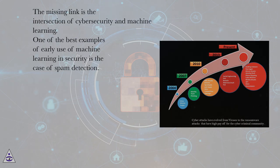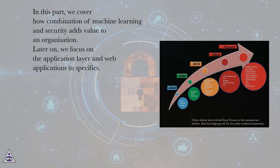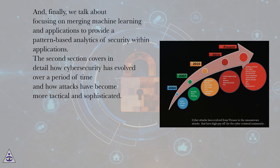One of the best examples of early use of machine learning in security is the case of spam detection. In this lecture, we cover how cybersecurity has evolved over time and how attacks have become more tactical and sophisticated. We also talk about what machine learning is and its associated components, how the combination of machine learning and security adds value to an organization, the application layer and web applications specifically, and finally, merging machine learning and applications to provide pattern-based analytics of security within applications.